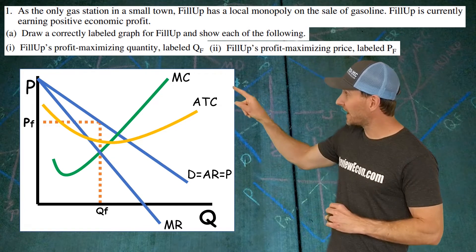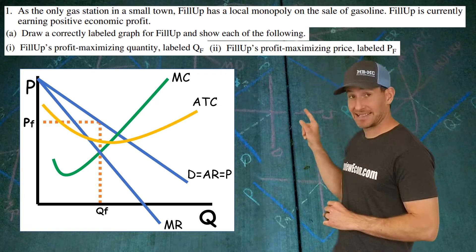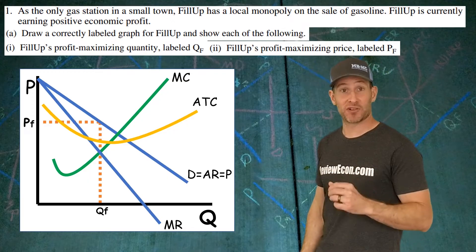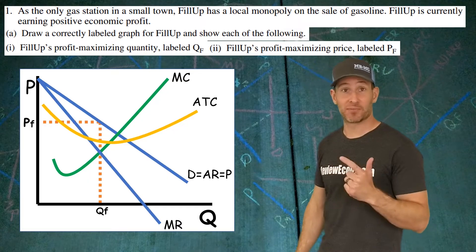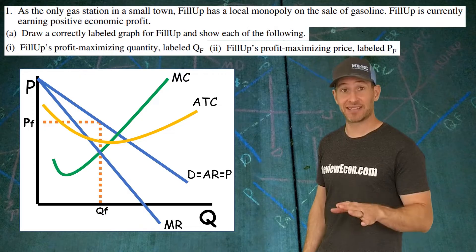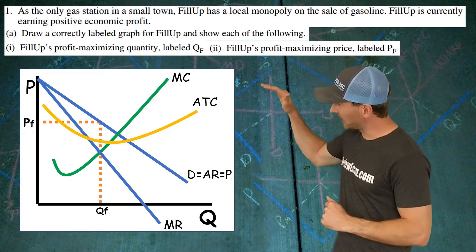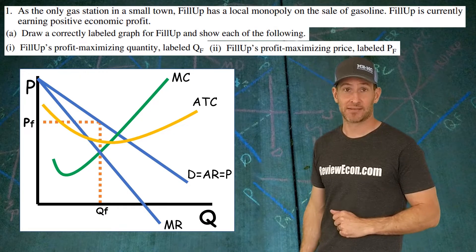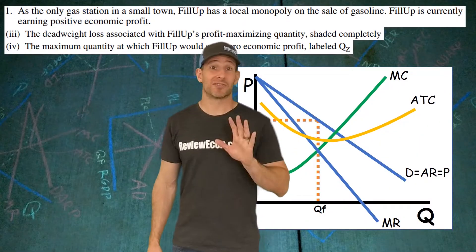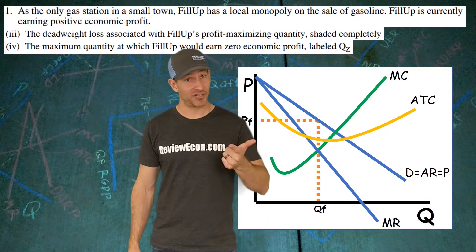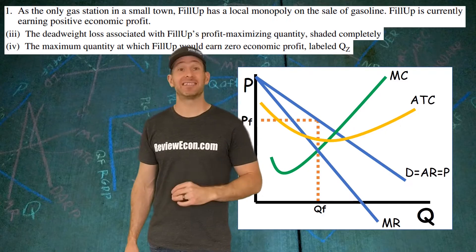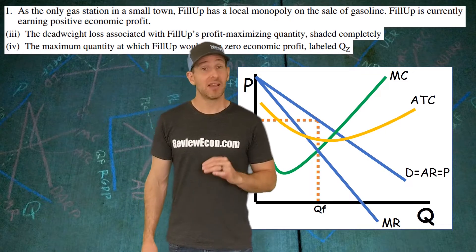Draw in the ATC last, based on whether the firm is earning profits, breaking even, or losing money. In this case it's profit, so you need a low average total cost curve below the price point on the demand curve. That gives us parts one and two of this question.